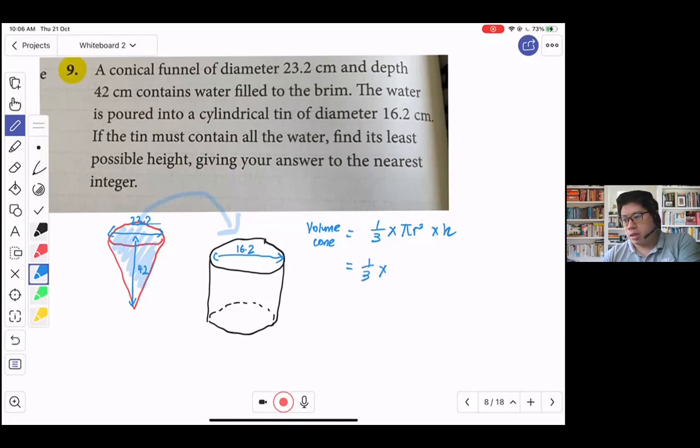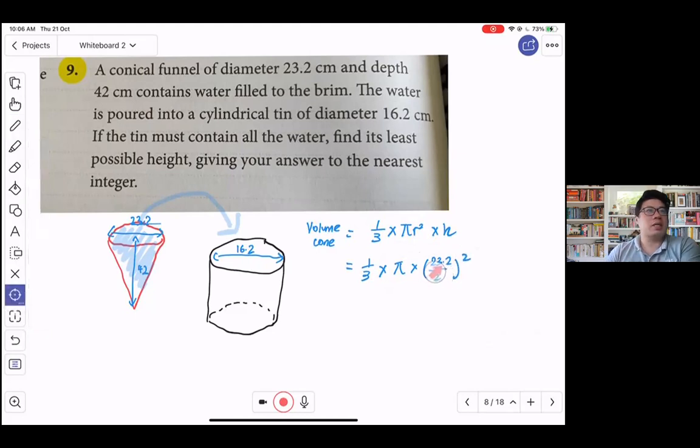Multiplied by r², so your r² here would be 23.2 divided by 2 squared. Because remember that this 23.2 represents the diameter, so to find the radius, to find the r, we have to divide it by two.